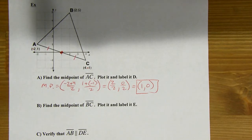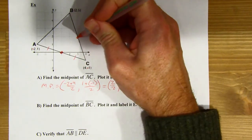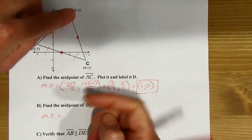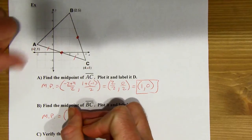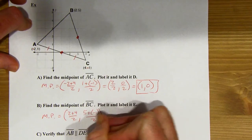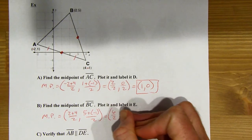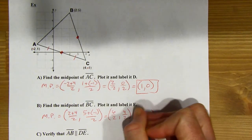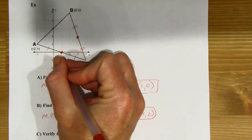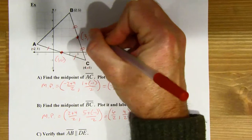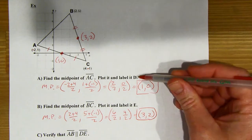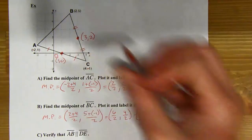Part B: find the midpoint of BC. I can kind of see on the grid where that's going to end up, but let's go ahead and use the midpoint formula again. I'll average my X's — 2 and 4 — and average the Y's, which is 5 and negative 1. That midpoint is going to be the point (3, 2). I'll put those coordinates in the picture. It said to label the first one D, so this is point D, and this was point E.